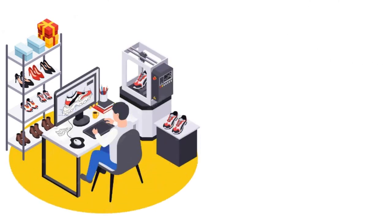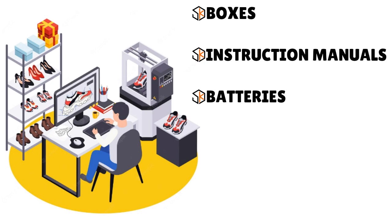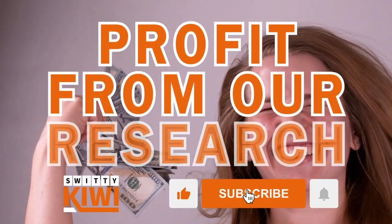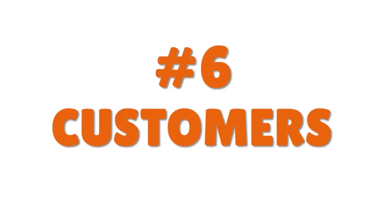Invite potential buyers to contact you if they have queries, and list all your terms and conditions including payment, postage, packing, and refunds. Include keywords in headlines and descriptions. Take good photos of the items you're selling — photos add maximum credibility. If there are extra components like boxes, instruction manuals, or batteries, include them in the photo. You can upload 12 photos to a listing for free at one time.